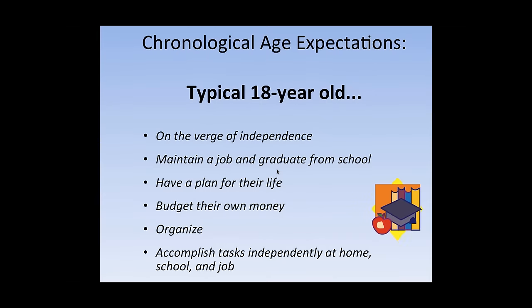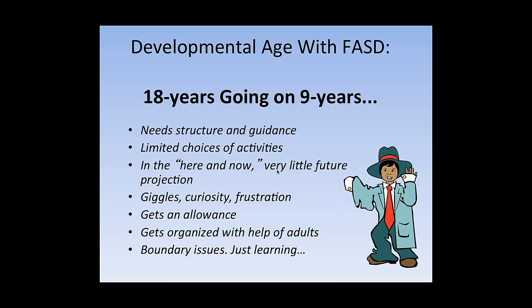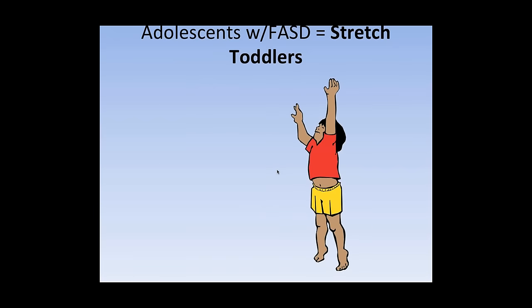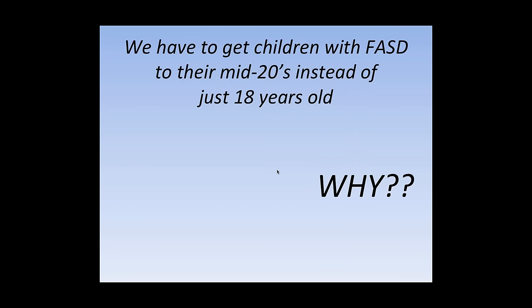A typical child with FASD might be five going on two problem-solving-wise. A typical 18-year-old is on the verge of independence, getting ready to plan their own life. Well, a typical 18-year-old with FASD might be 18 going on nine or younger, even with a high IQ. Let's think if we took an eight or nine-year-old, stretched them to look 18, shot them full of hormones, and sent them in the adolescent world, what kind of issues might we have? Exactly the issues that we have with our students with FASD. I like to say that our adolescents with fetal alcohol spectrum disorder are stretched toddlers.